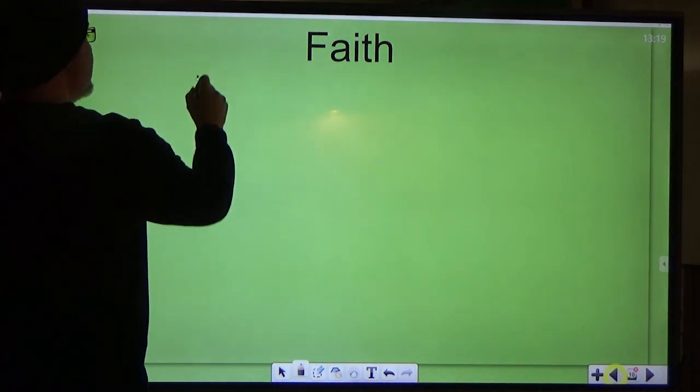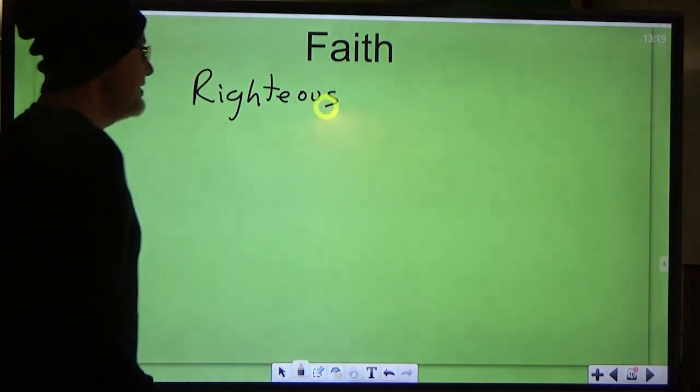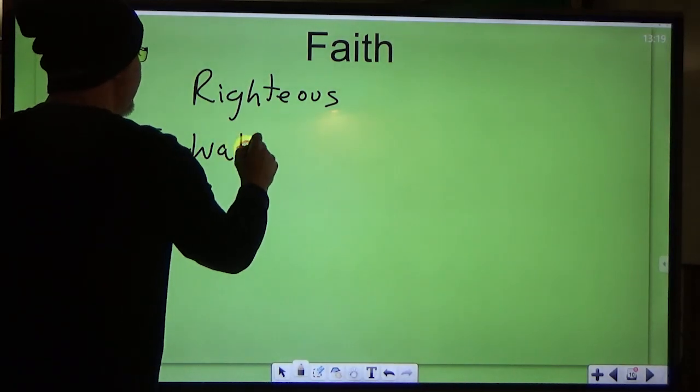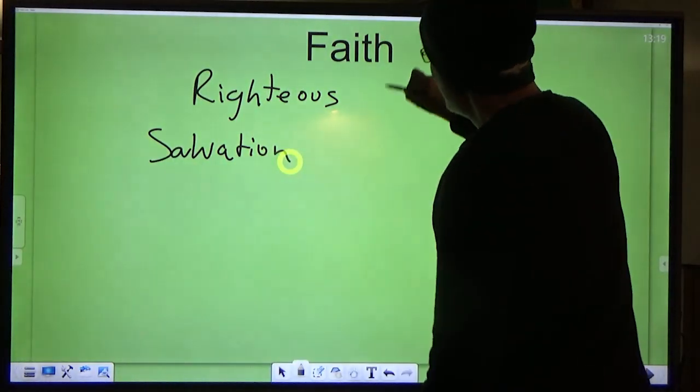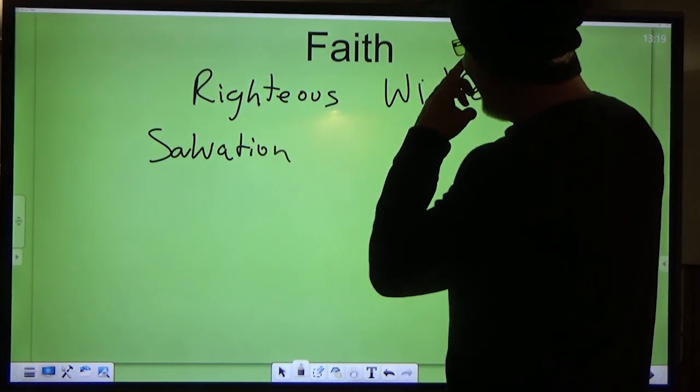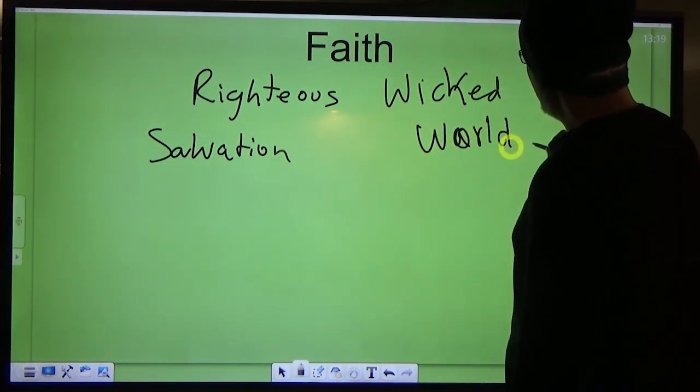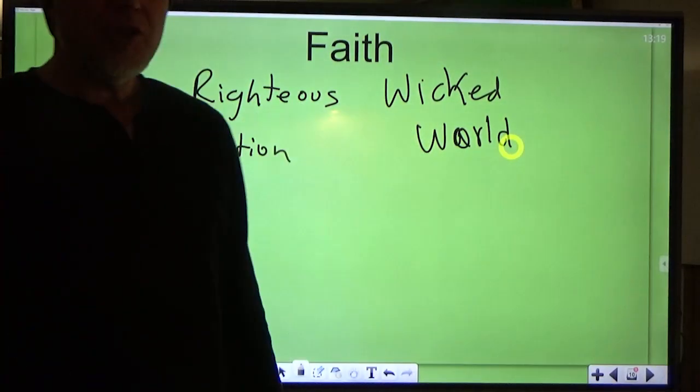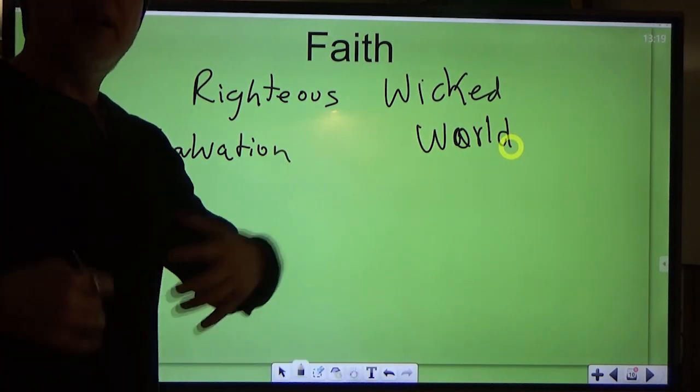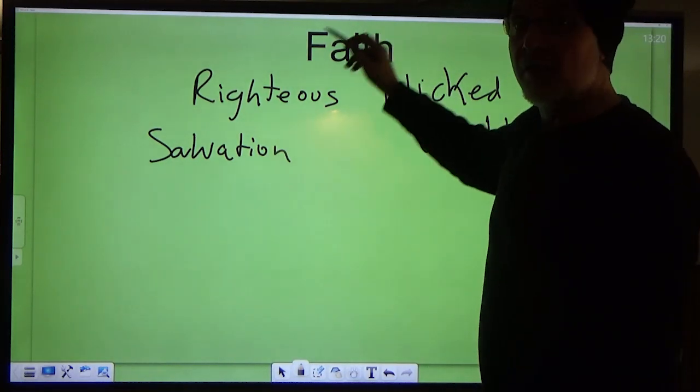So, you have faith used by righteous people to believe things that will lead to the salvation of the soul. And then you have the wicked who use faith to gain the whole world. You can become a millionaire with faith. You can do a lot of things. You can get rich, you can build houses, you can start businesses, you can believe and get all kinds of things. And it is a powerful mechanism. It's a reality that we all share, both the righteous and the wicked.